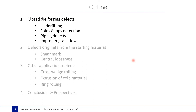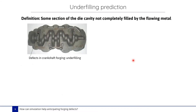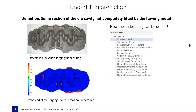First, I will start with the closed die forging defects — the underfilling. The underfilling is the defect that appears when some section of the die cavity is not completely filled by the flowing metal. Here, an example of a crankshaft forging. We can see in this zone the occurrence of underfilling. Simulation software can be very helpful in determining the cause of and solution for these defects. In Forge software, the contact scalar available in the result selector helps you to detect the underfilling zone.